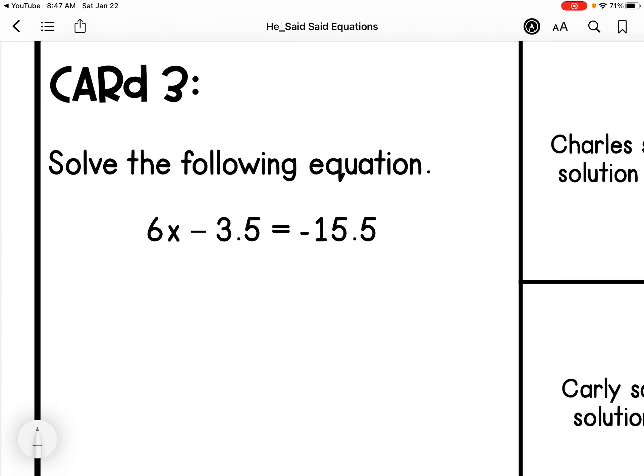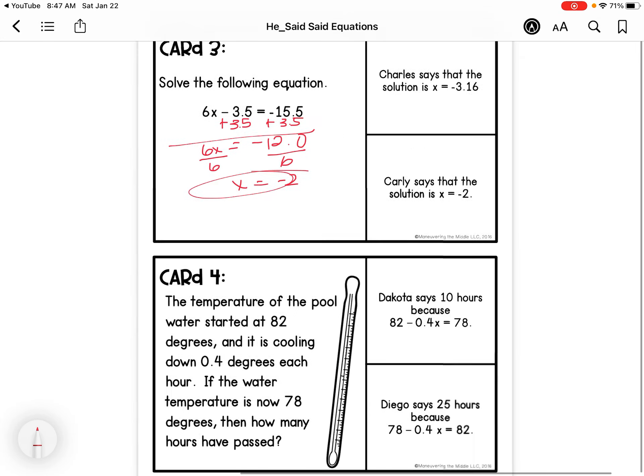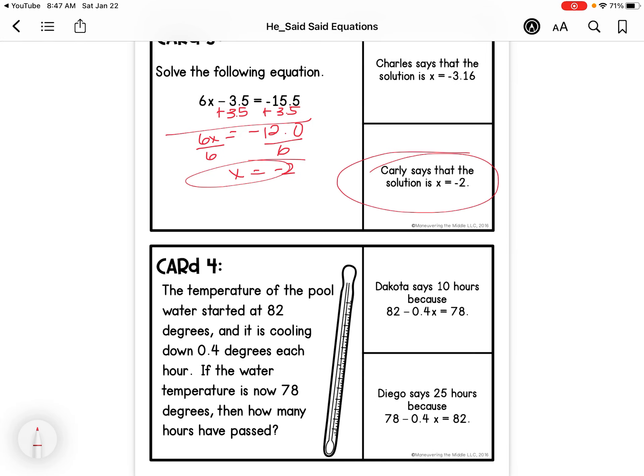Solve this equation. So I'm going to add 3.5 to each side. When my signs are different, I'm actually going to subtract. It's going to be negative. I'm going to divide by 6. So X equals negative 2. So Carly is correct.